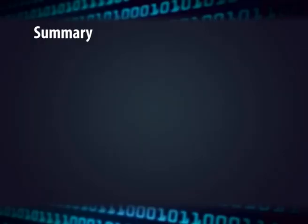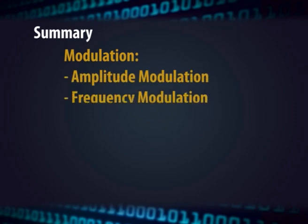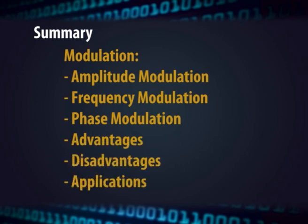Apart from the type of modulation itself, the type of signal being used to modulate the carrier also has an important effect. It is often important to know the signal type that needs to be carried by the RF carrier. In this session we have understood modulation, amplitude modulation, frequency modulation, and phase modulation, with their important advantages, disadvantages, and applications.